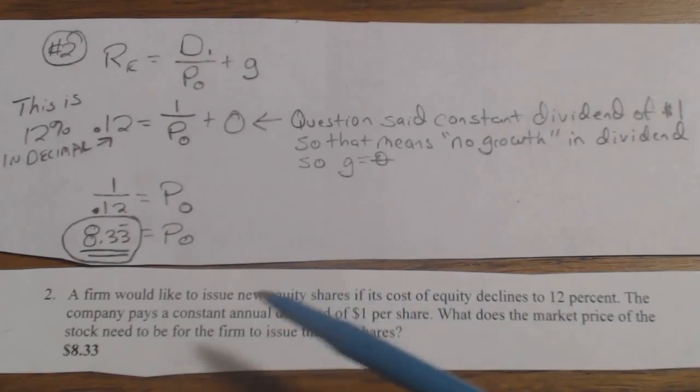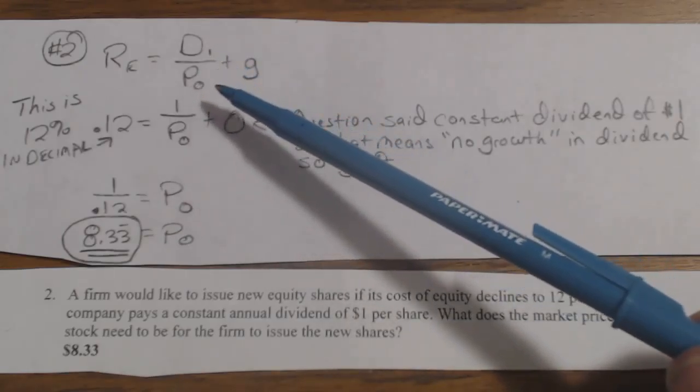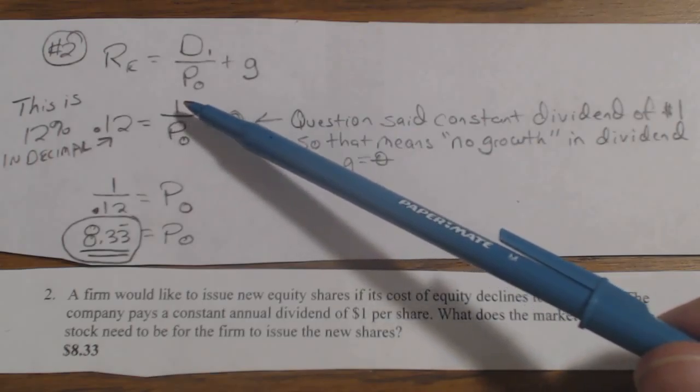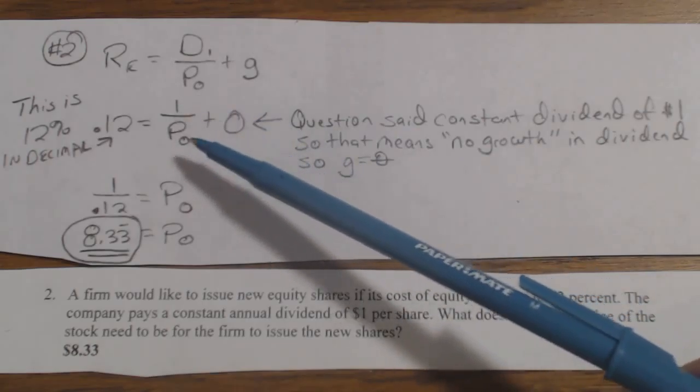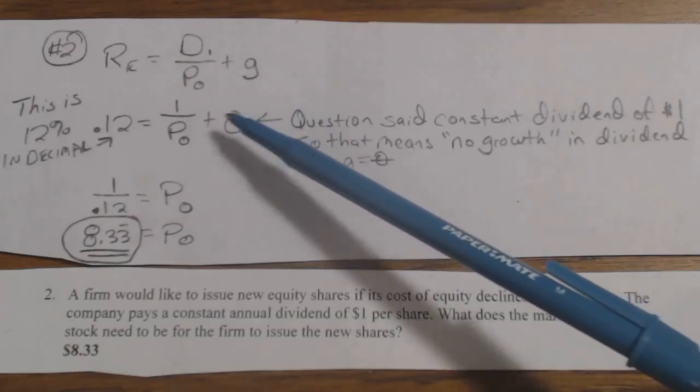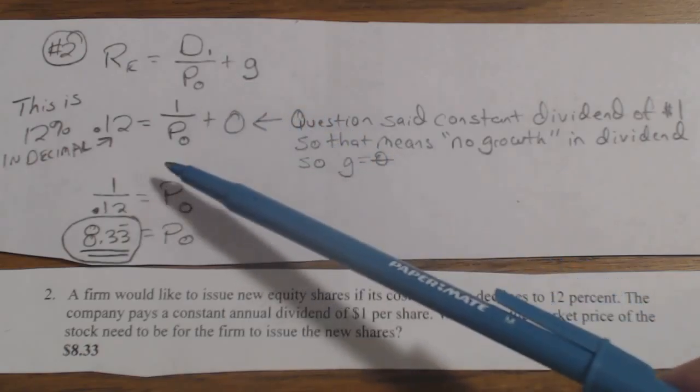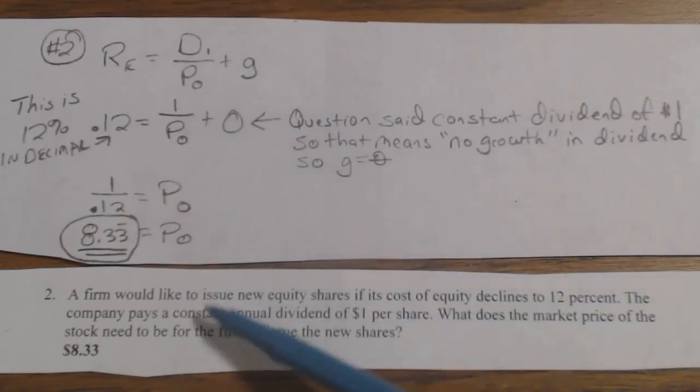the RE is going to be 12%. The company pays a constant dividend of $1 share, so you know that D1 and D0 and D5 and D8 are all the same, it's $1 because there is no growth rate. So you don't have to take D0 times 1 plus the growth rate, because 1 plus the growth rate is 1 over the price of 0.